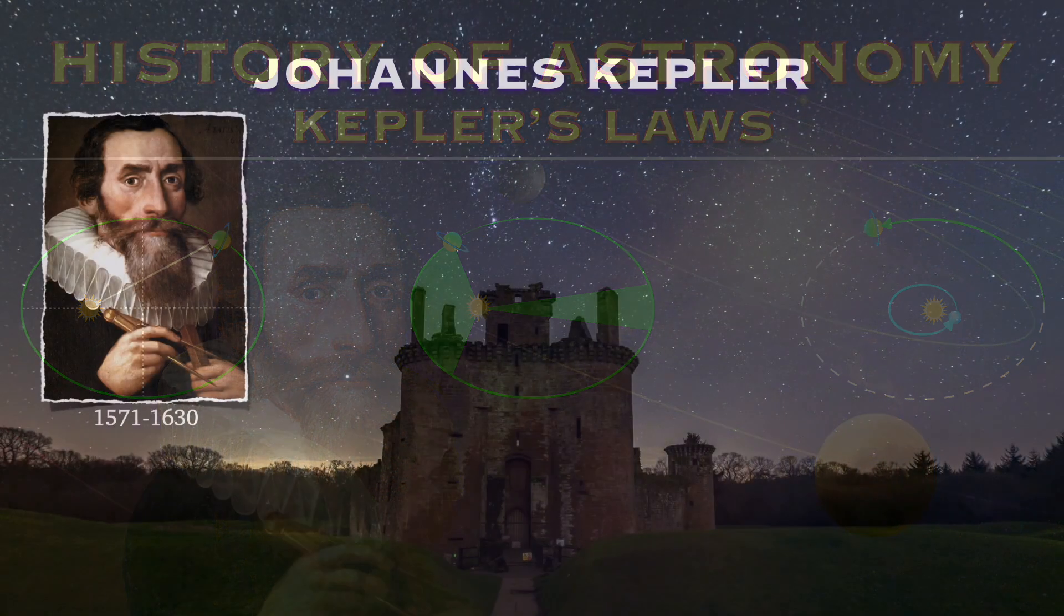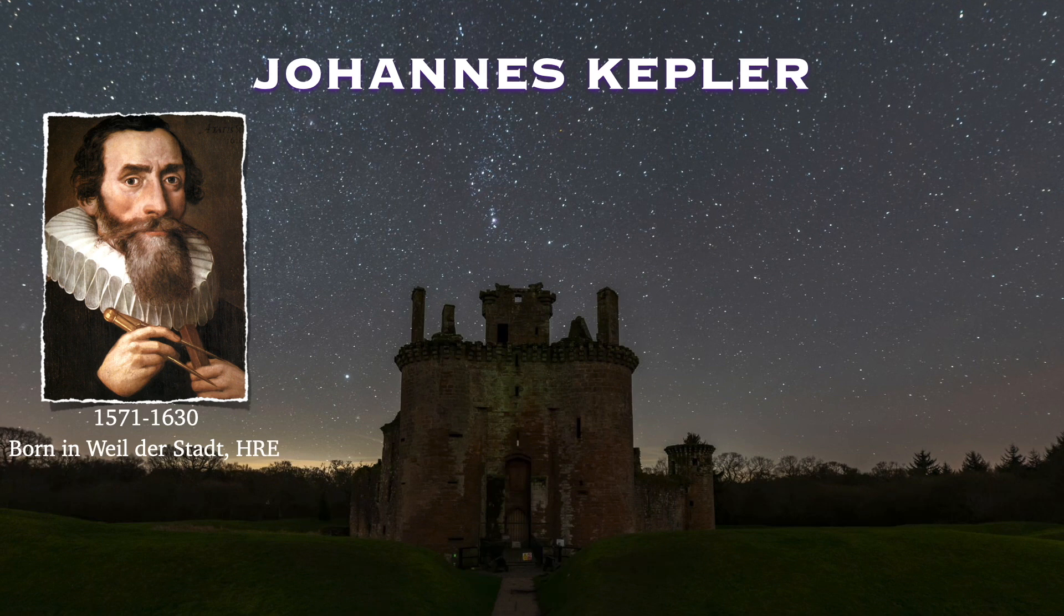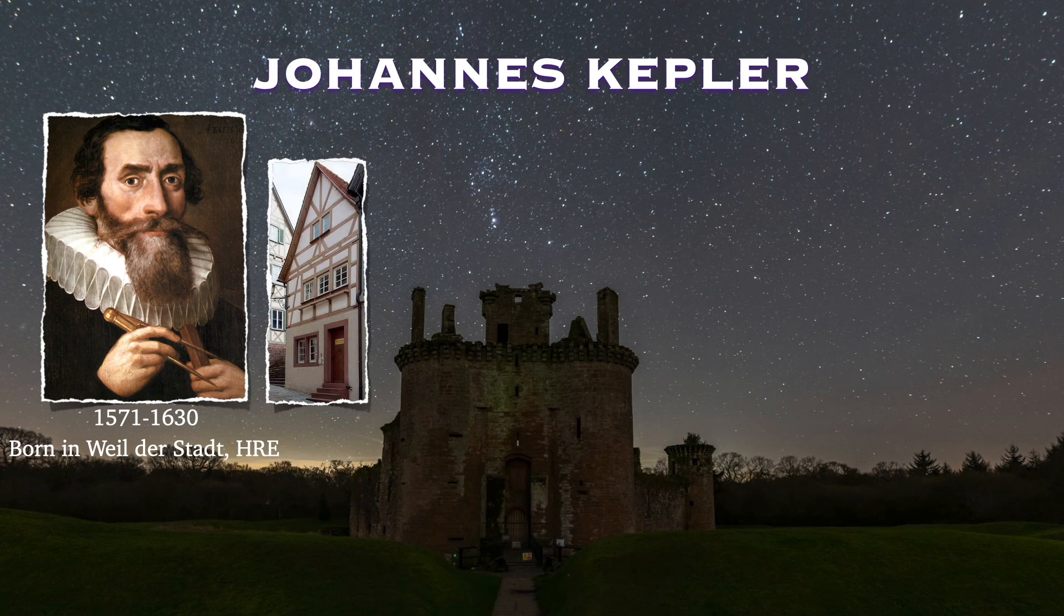Let's start with a quick summary on who Johannes Kepler was. He was born in the 16th century in the Holy Roman Empire near what is today Stuttgart, Germany. In fact, the house he was born in is still standing. After his university studies, he bounces around a bit, getting a few different jobs as an astronomer or a mathematician.